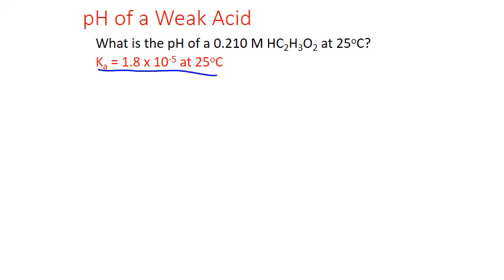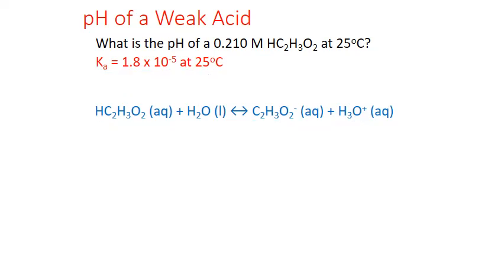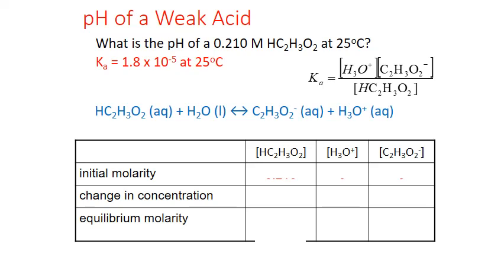You'll need to write the acid ionization reaction and equilibrium expression yourself. Since ionization of acids always follows the same general form, you take the acid — in this case acetic acid — as one reactant and water as the other. On the product side, the acid donates a hydrogen to the water, giving us the acetate anion and hydronium ion, H3O+. This translates into the equilibrium expression: Ka equals the concentration of hydronium ion times the concentration of the acetate anion, divided by the concentration of acetic acid at equilibrium. We can then set up an ICE table with a column for each substance in the equilibrium expression; since water is a pure liquid, it is not included.